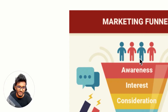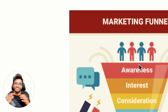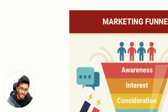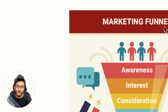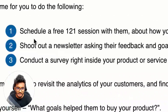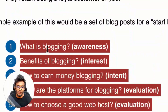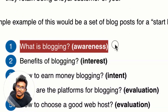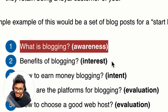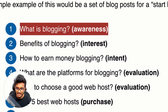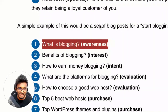There are different goals at various stages of the funnel. In the awareness stage, you're converting cold audiences to warm by provoking interest. They consider your brand, evaluate, and make a purchase — that's a typical marketing funnel. Your content should align to each funnel stage. For example: 'What is blogging?' is an awareness post, 'Benefits of blogging' targets interest, and 'How to earn money blogging' targets intent — fulfilling the user's intention of earning money through blogging.